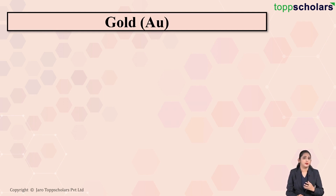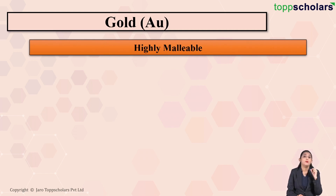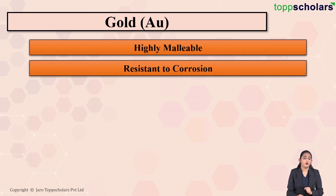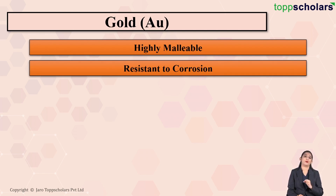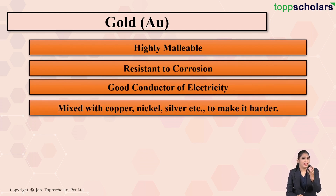Gold is quite precious because of its scarcity as well as its chemical stability. Gold is said to be highly malleable — pure gold is a very soft metal and is the most malleable metal. Gold does not easily react with other substances, making it resistant to corrosion. Gold is also a good conductor of electricity.